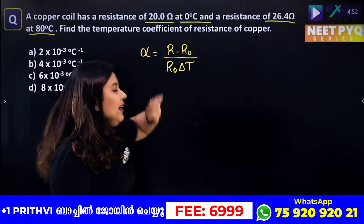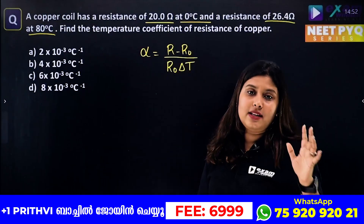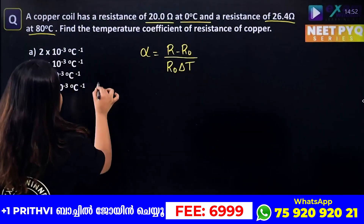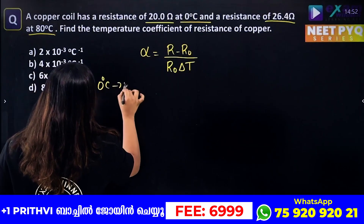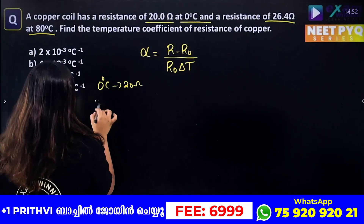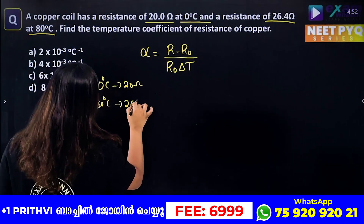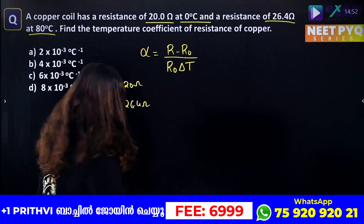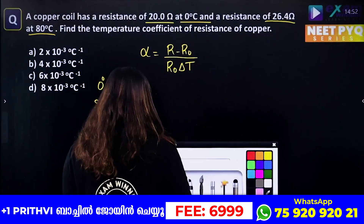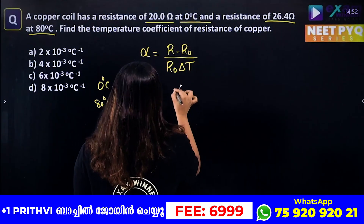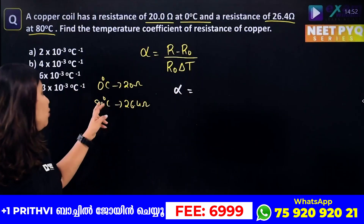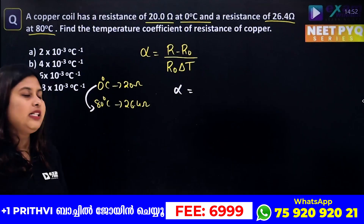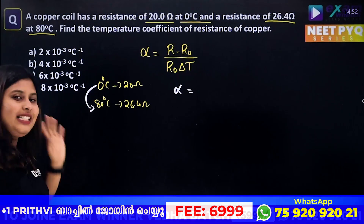Ready? R is the resistance at the final temperature. R₀ is the resistance at the initial temperature. If we are at 0 degree Celsius, the resistance is 20 Ohm. At 80 degree Celsius, the resistance is 26.4 Ohm. Now we will substitute. Alpha is equal to R. The final temperature here is 80 degree Celsius.